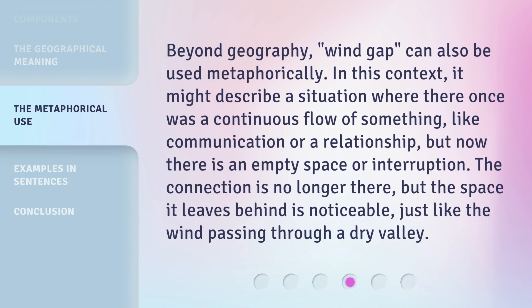Beyond geography, wind gap can also be used metaphorically. In this context, it might describe a situation where there once was a continuous flow of something, like communication or a relationship, but now there is an empty space or interruption. The connection is no longer there, but the space it leaves behind is noticeable — just like the wind passing through a dry valley.